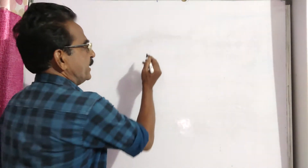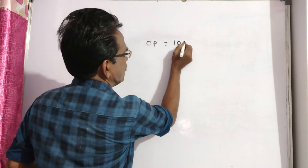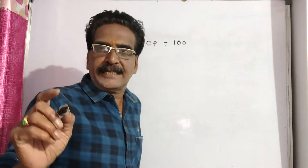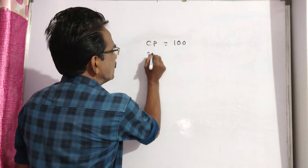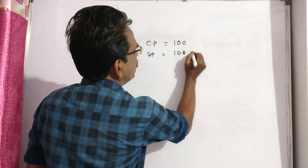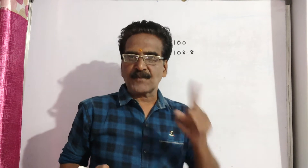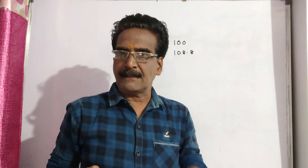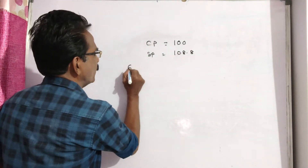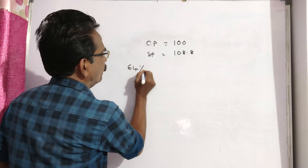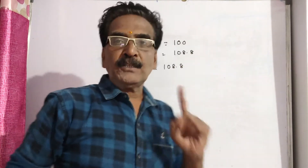Cost price is 100. Now he is getting 8.8 profit. If 36 percent commission is allowed, sold price is equal to 108.8. This sold price is after 36 percent commission, which means this sold price is equal to 64 percent of the market price. So 64 percent of the market price is equal to 108.8.